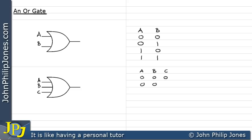These two can be 0 while this one's a 1. This can be a 0 while that one's a 1 and this one's a 0. This one can be 0 while that's a 1 and this is a 1. This one can be a 1 while both of these are actually a 0. And finally, they all can be 1.